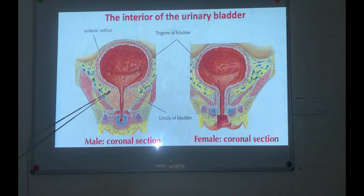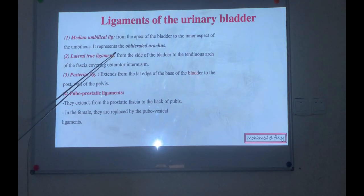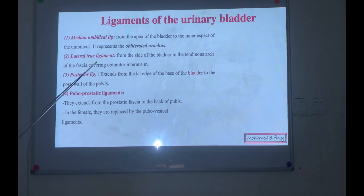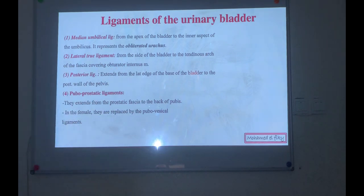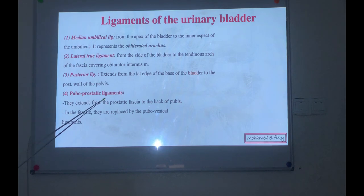Ligaments of the urinary bladder: the median umbilical ligament at the apex, which is the obliterated urachus. The lateral true ligament runs from the side of the bladder to the tendinous arch of the fascia covering the obturator internus. The posterior ligament runs from the lateral range of the base of the bladder to the posterior wall — called the puboprostatic ligament in male or pubovesical ligament in female.